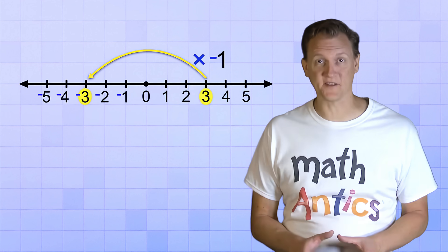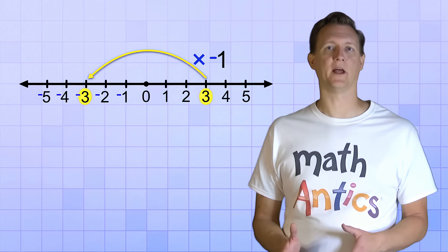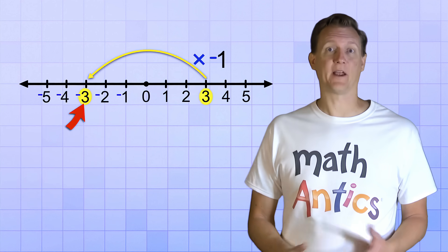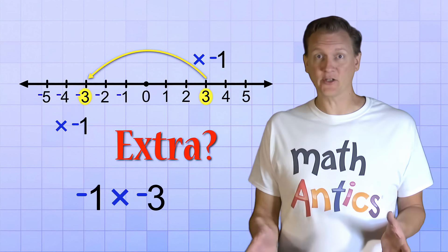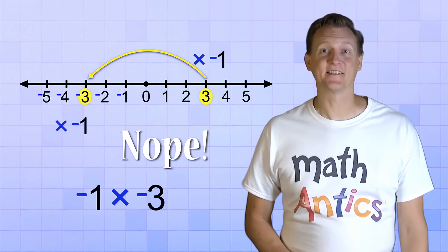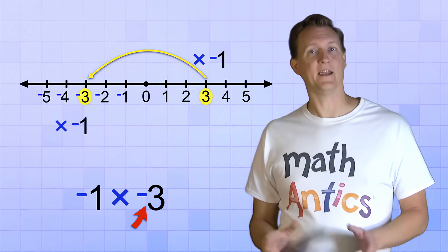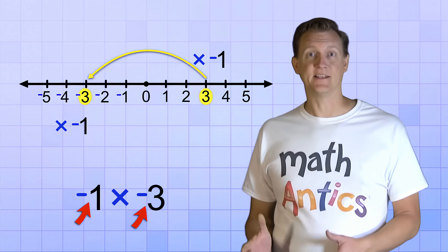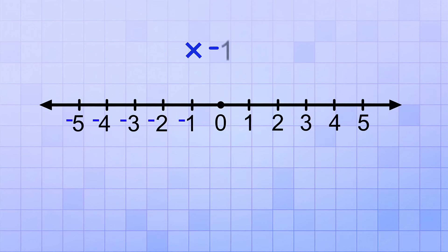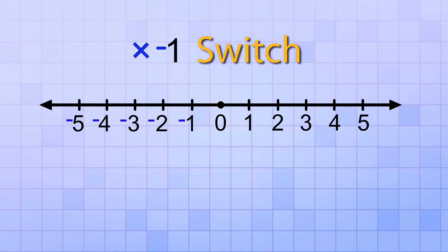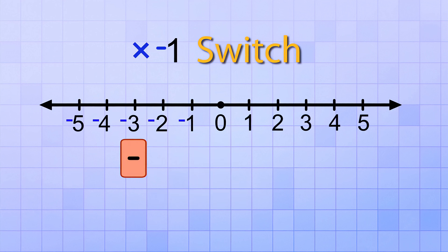But that raises an interesting question: what happens if you multiply a number that's already on the negative side by a factor of negative 1? Like negative 1 times negative 3 — is that going to make it extra negative? Nope. In fact, it's going to do just the opposite. Multiplying a negative number by another negative factor is actually going to switch the answer back to the positive side of the number line. Multiplying by negative 1 acts like a switch no matter which side you start on — if you start with a positive, it switches to negative; if you start with a negative, it switches back to positive.